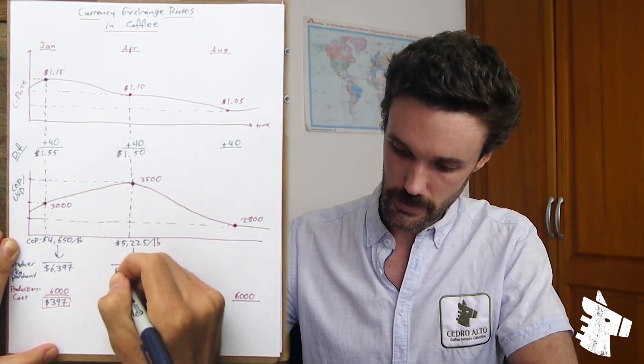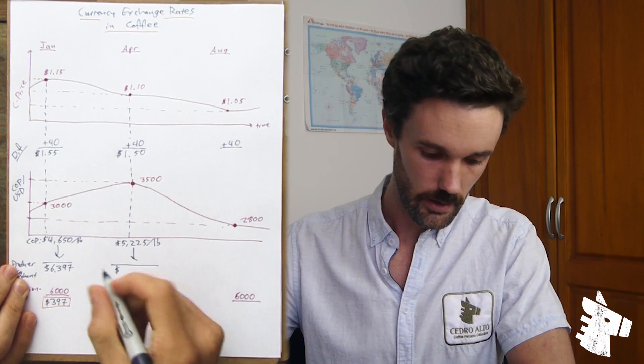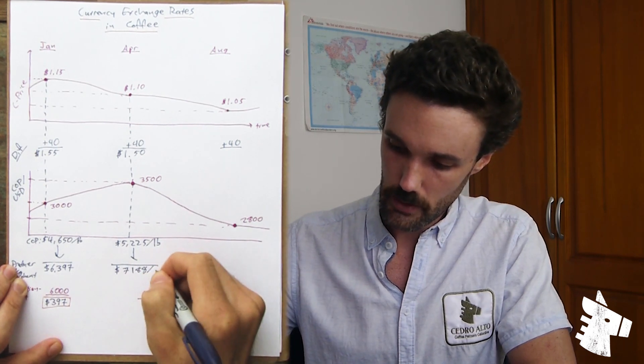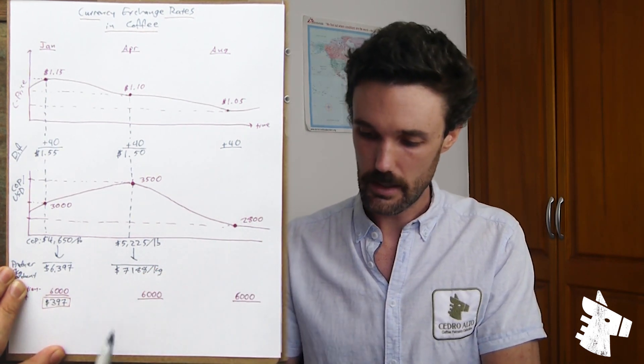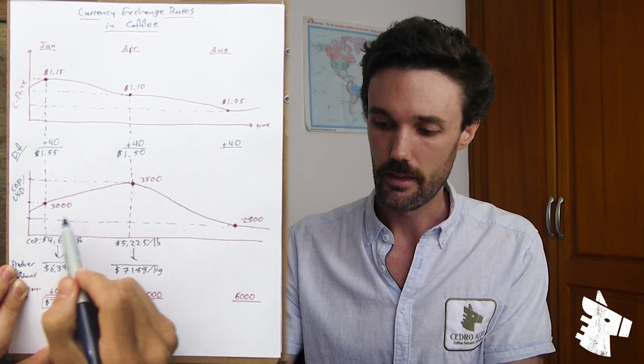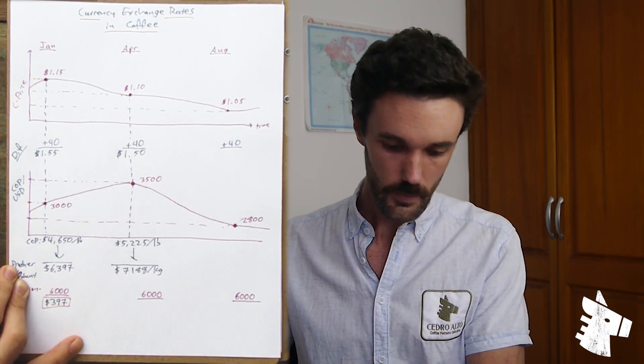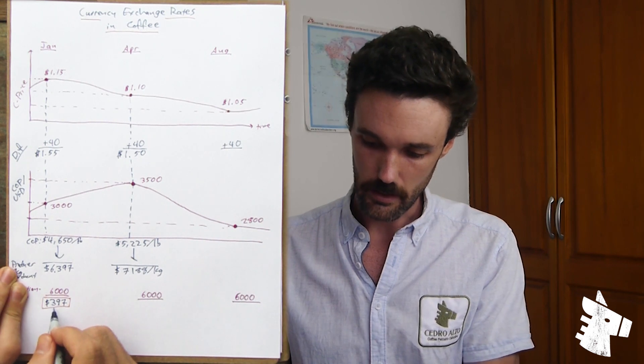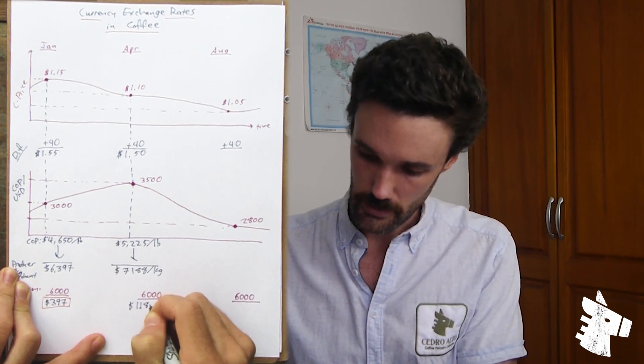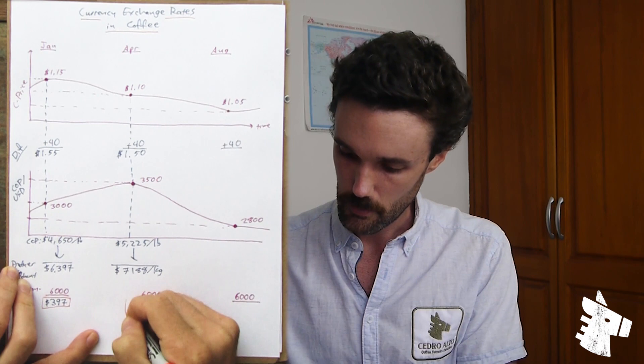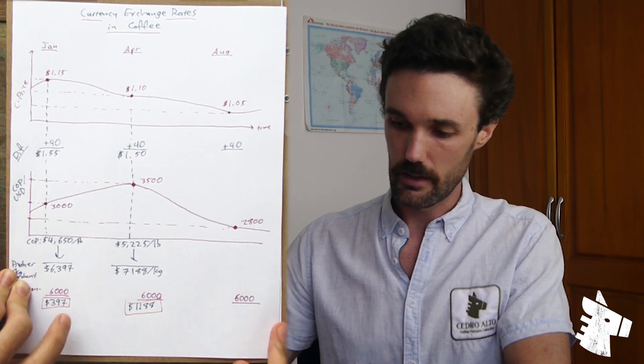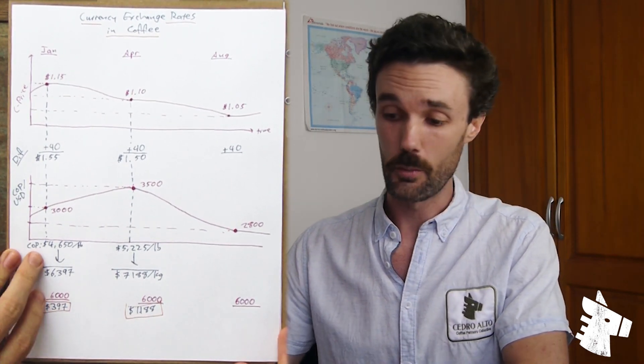Which then translates, by the calculation we mentioned a moment ago, to 7,188 Colombian pesos per kilo of parchment. Much better for the farmer, right? They're earning more Colombian pesos per kilo of dry parchment than they were before. Even though the C price fell, the Colombian peso also depreciated. So in this case, the farmer is not going to be making 397 Colombian pesos per kilo. Rather, 1,188 Colombian pesos per kilo. They're much better off even though the C price has fallen and the absolute dollar-denominated FOB price has fallen.